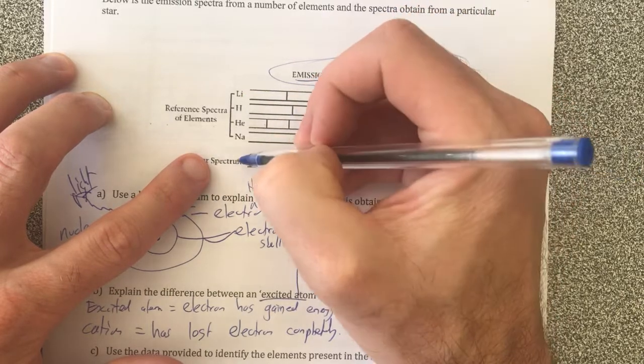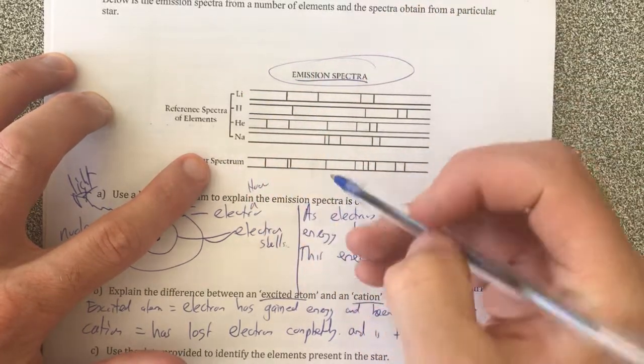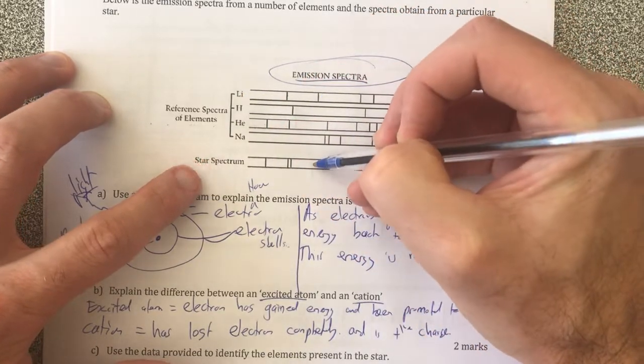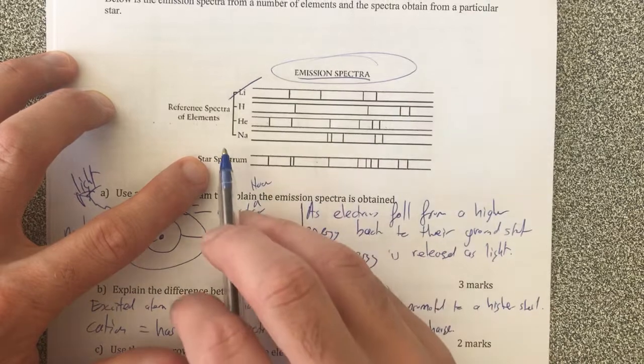So therefore, if this wavelength is present in the star, it has that element. If I look through it, I can see that lithium has a wavelength here, but the star does not, so it can't have lithium in it.